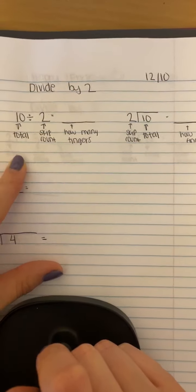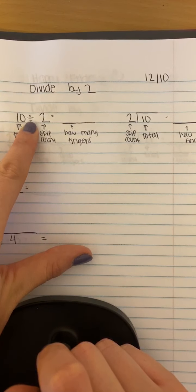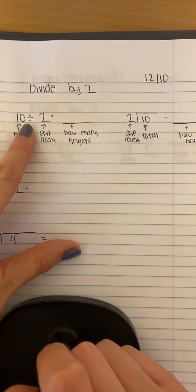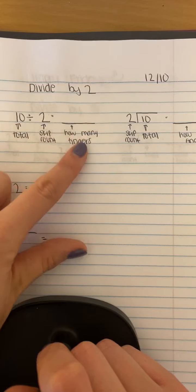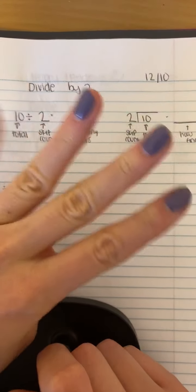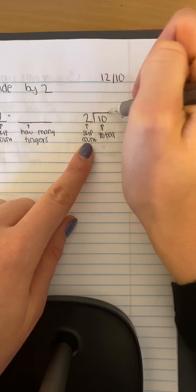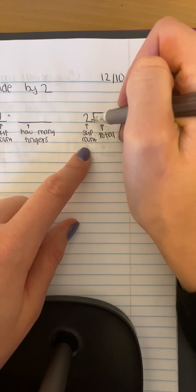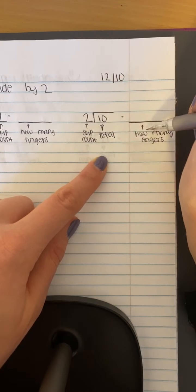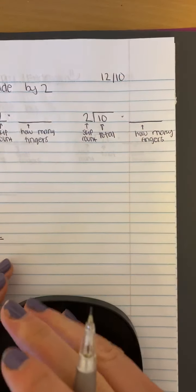So as you remember, when I see it like this with the division sign here, this is my total divided by how many I'm skip counting, to how many fingers it takes me to get to that answer. And when I see it like this, and I'm going to call this a little house, this is my total and this is what I'm skip counting by. This is how many fingers it takes me to get there.